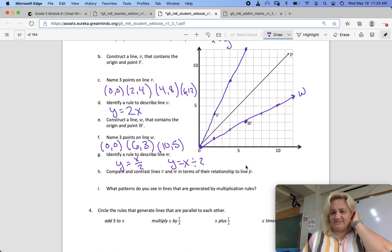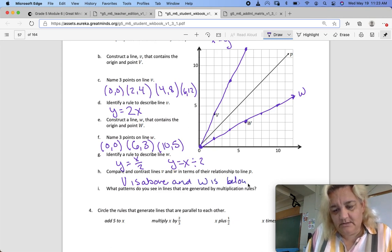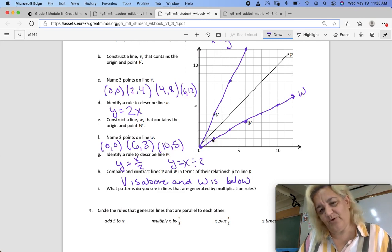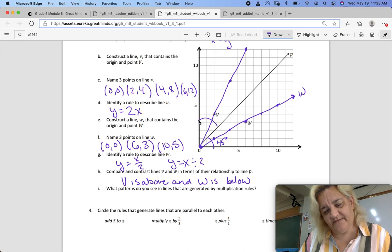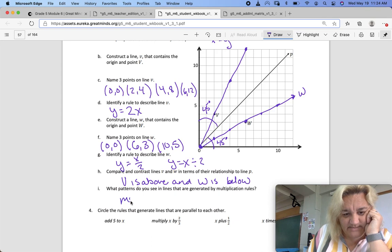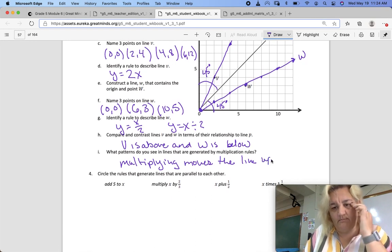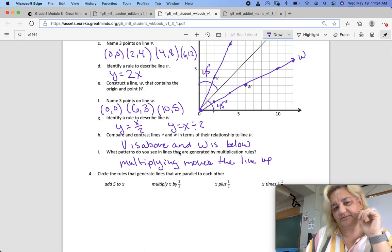Compare and contrast line V and W in terms of their relationship to line P. V is above and W is below. Are you starting to see that X equals Y is kind of our point of reference for us? That's our 45 degree angle. Everything else in between is different angles. What patterns do you see in the lines that are generated by multiplication rules? Multiplying moves the line up. And dividing moves the line out. So up and out.